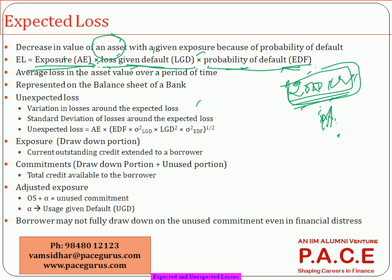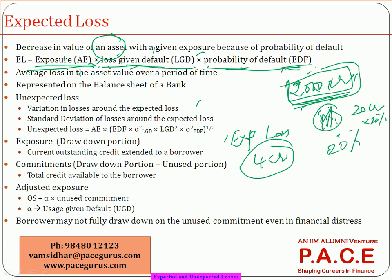So the probability of default is 1 percent. If a default occurs and 20 percent is not recovered on average — meaning the bank is able to collect 80 percent of the value and 20 percent is the loss given default — then the expected loss is: 2000 crores × 1 percent = 20 crores × 20 percent = 4 crores. So 4 crores is the expected loss on average, meaning roughly 1 percent of borrowers are expected to default.